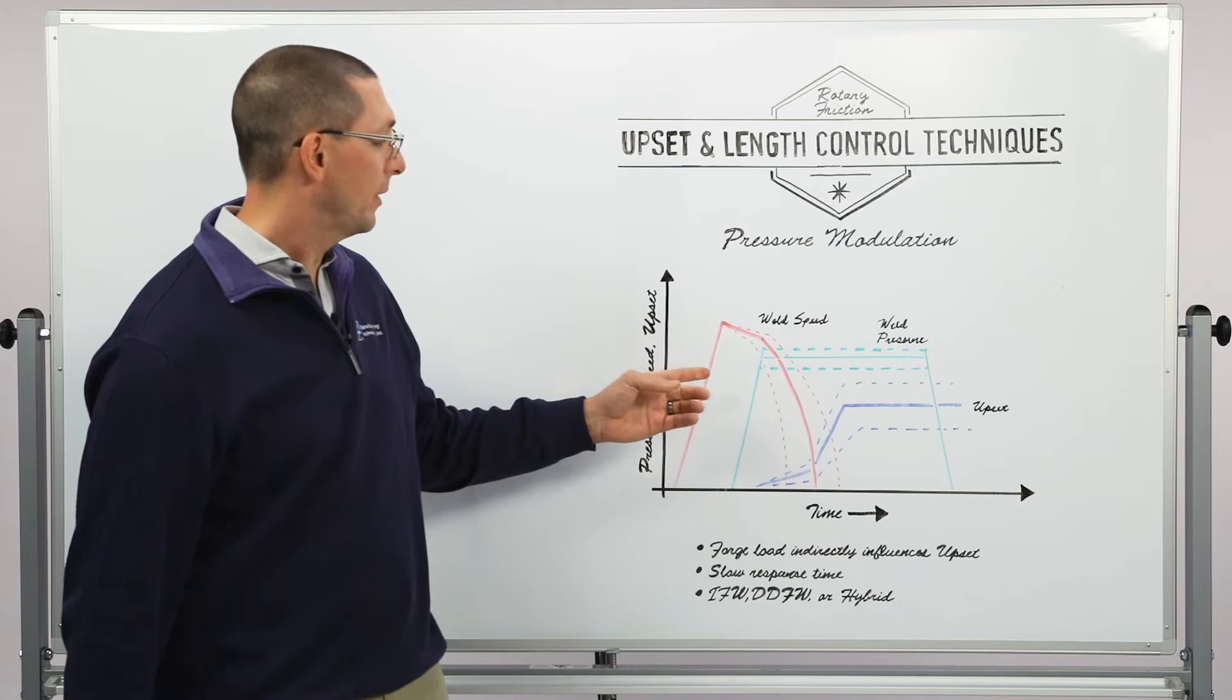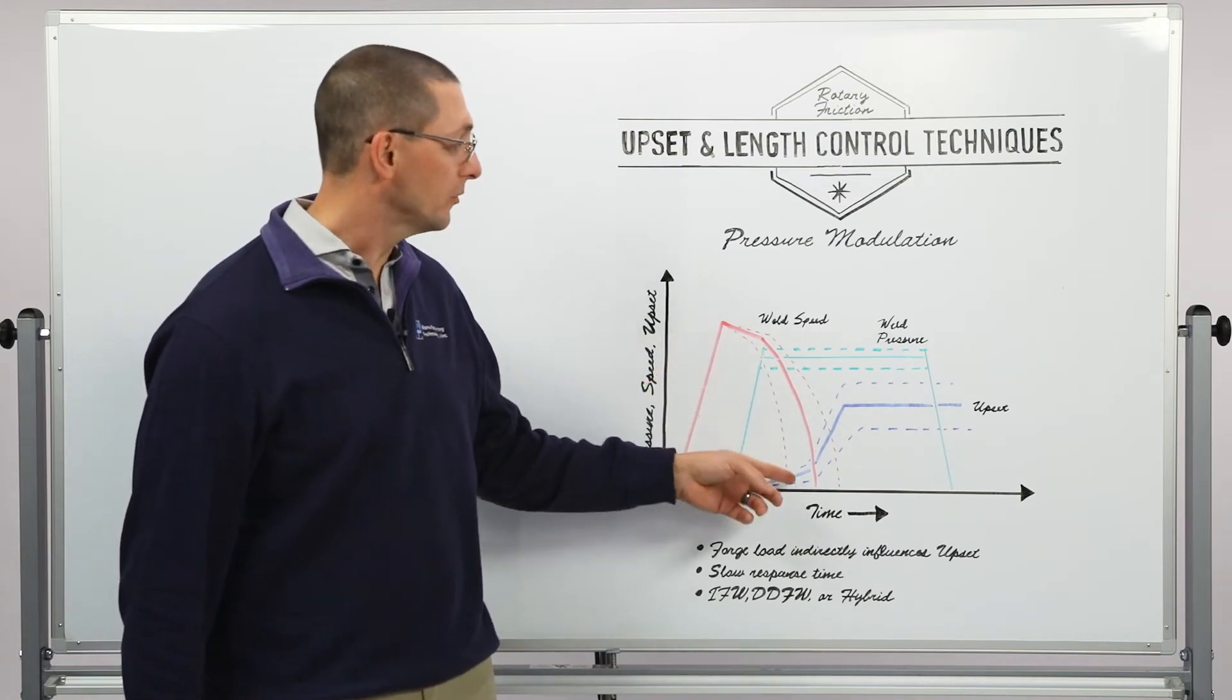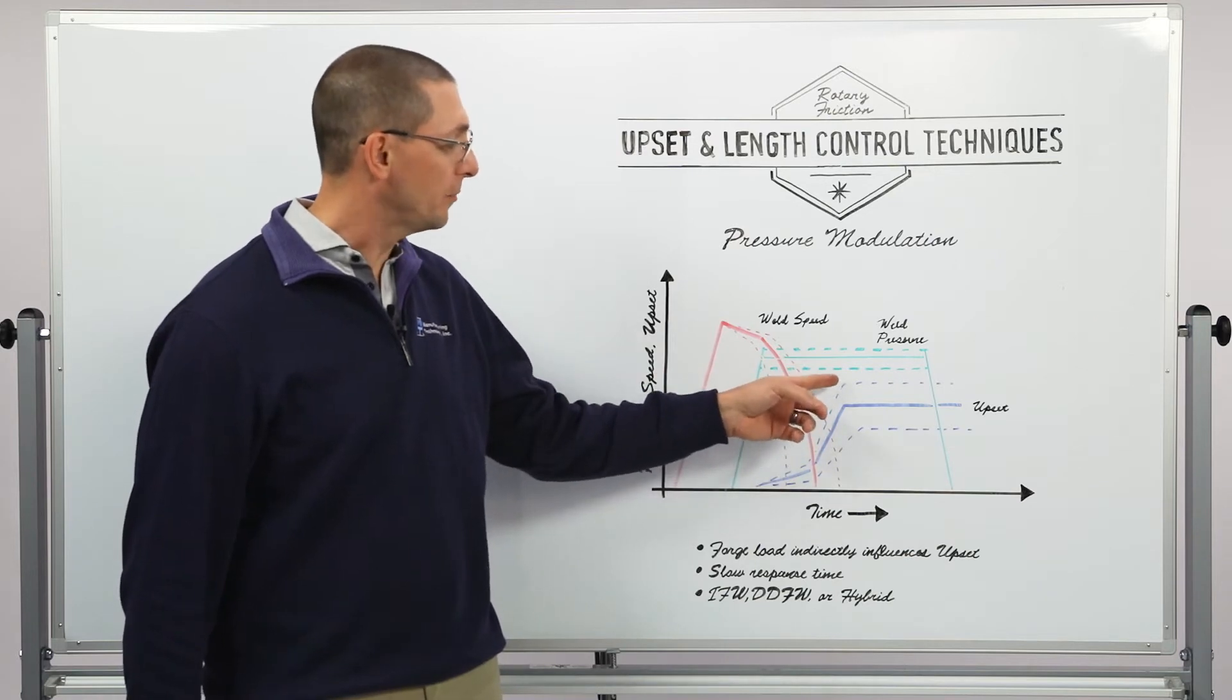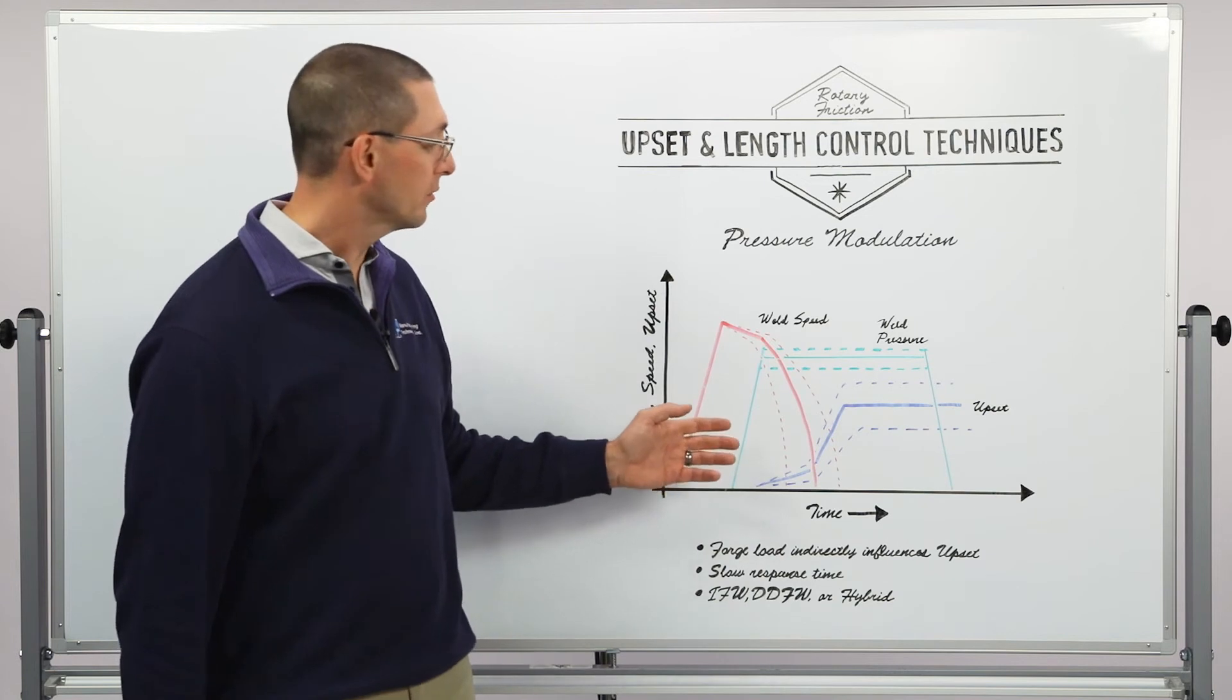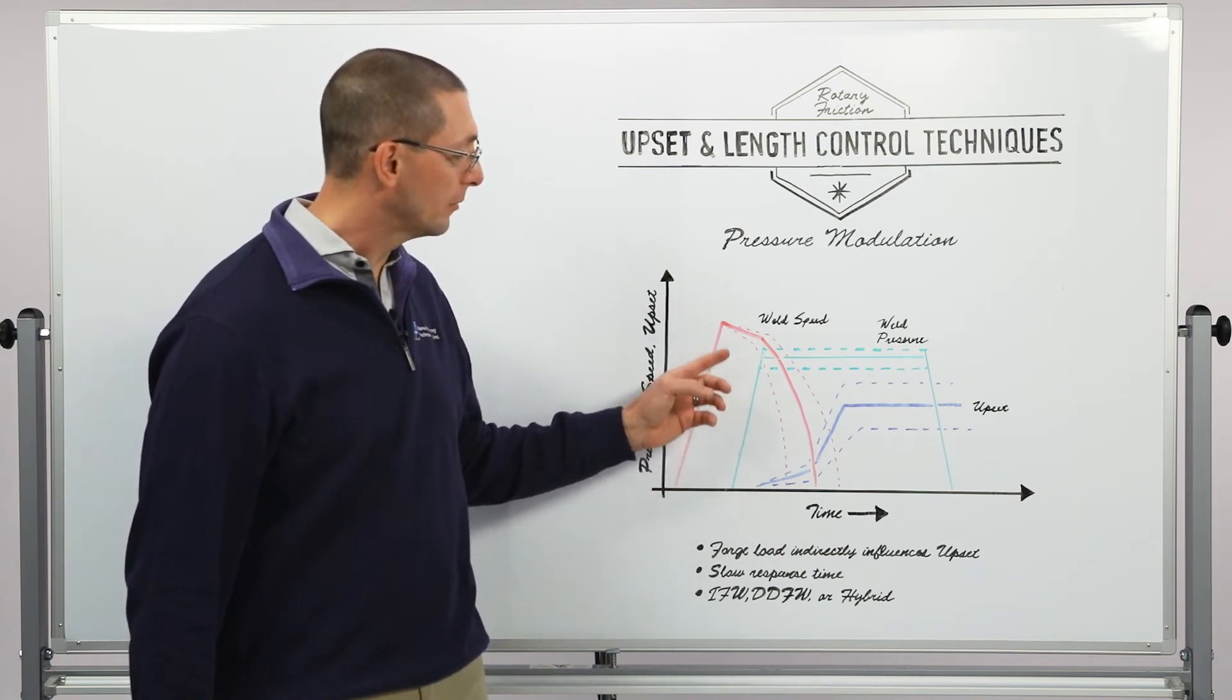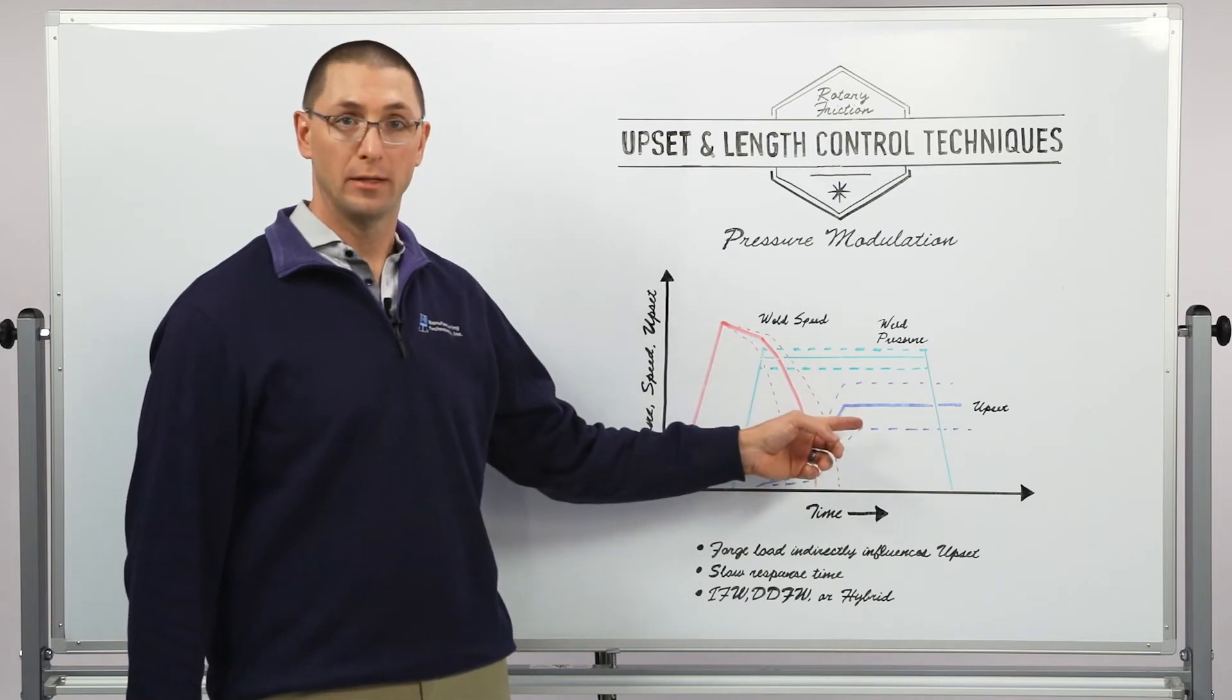We also talked about the fact that if I increase the amount of load or weld pressure that I use, I'm also going to increase the amount of upset that I get because I'm going to convert the energy faster. Conversely, if I decrease the amount of load that I use, I'm going to convert the energy slower and I'm going to end up with less upset in the weld.